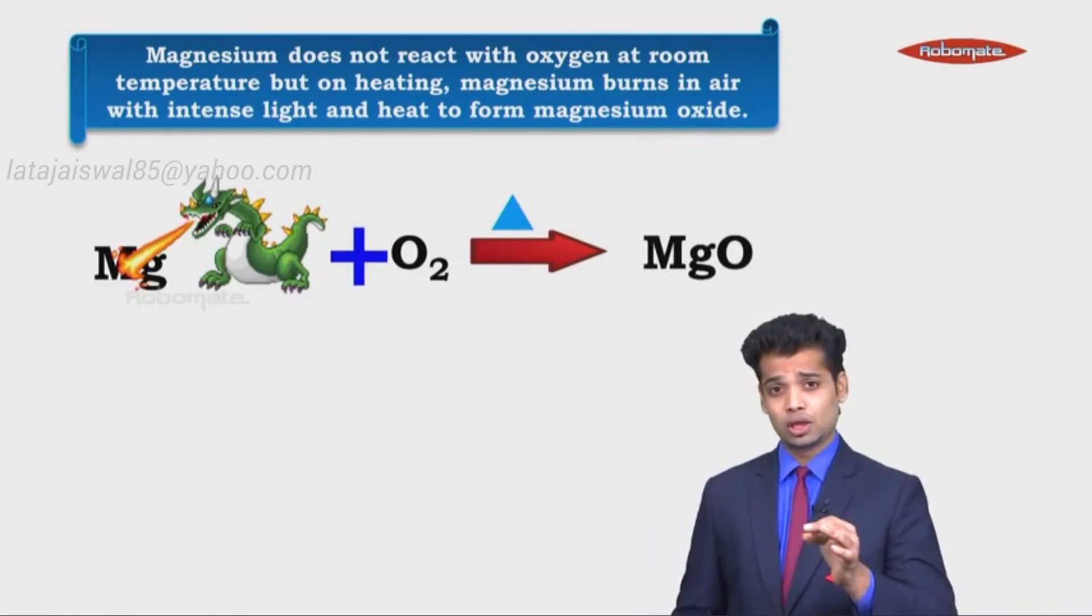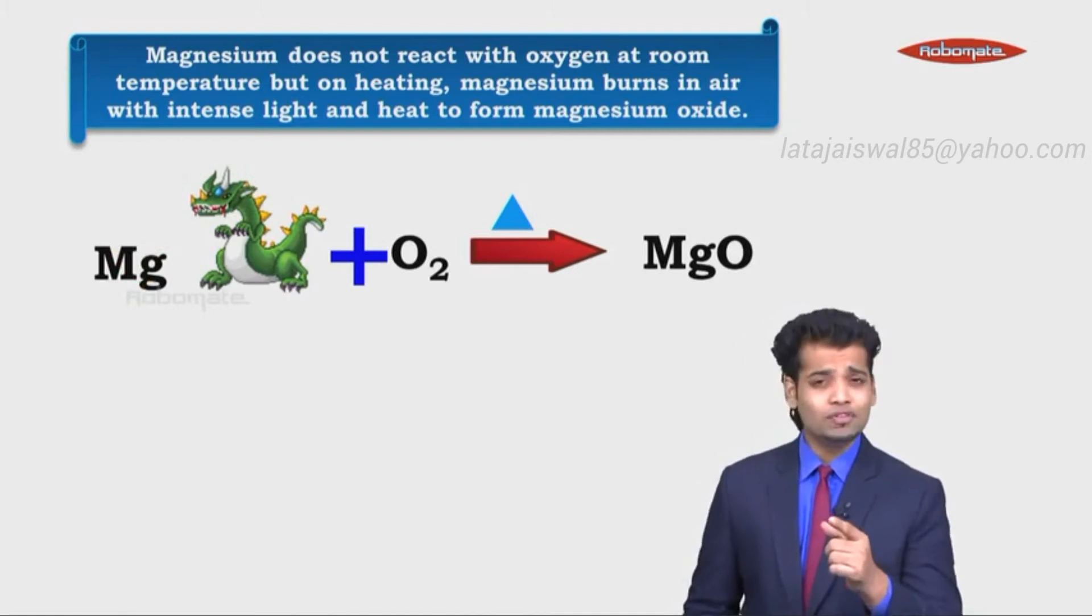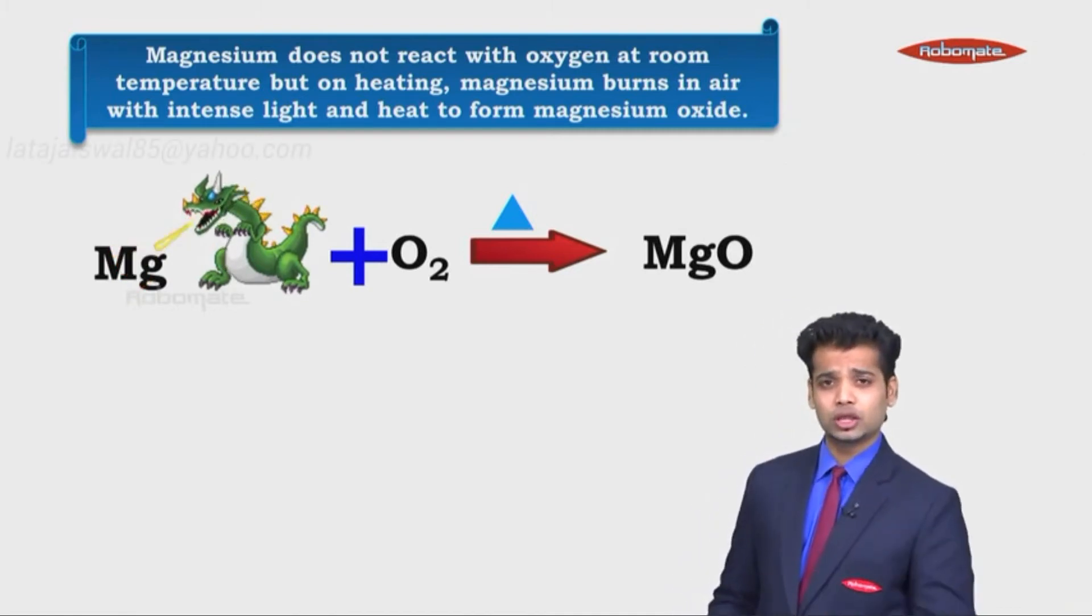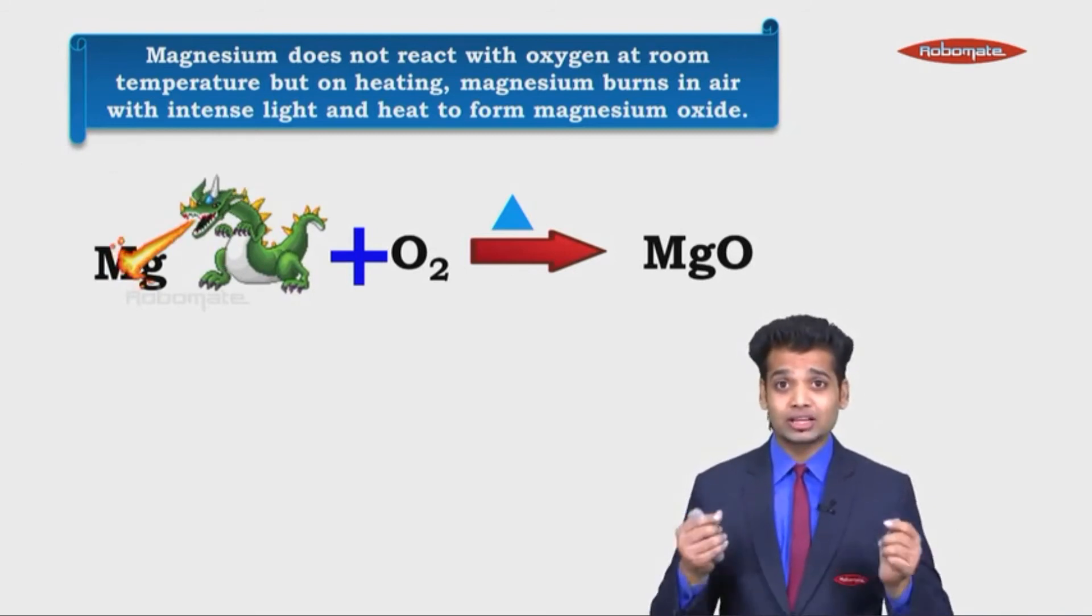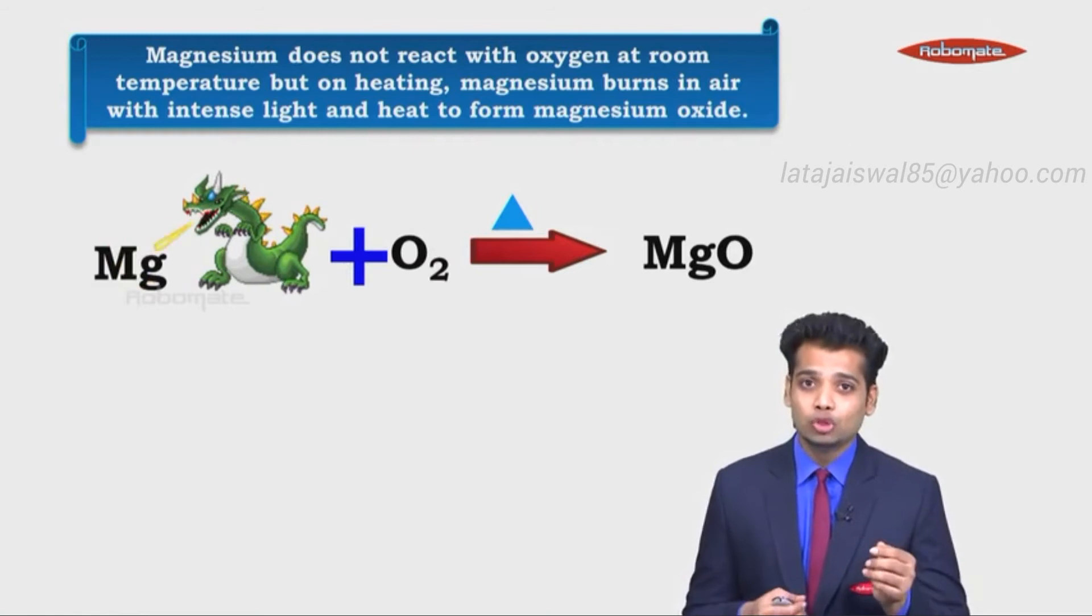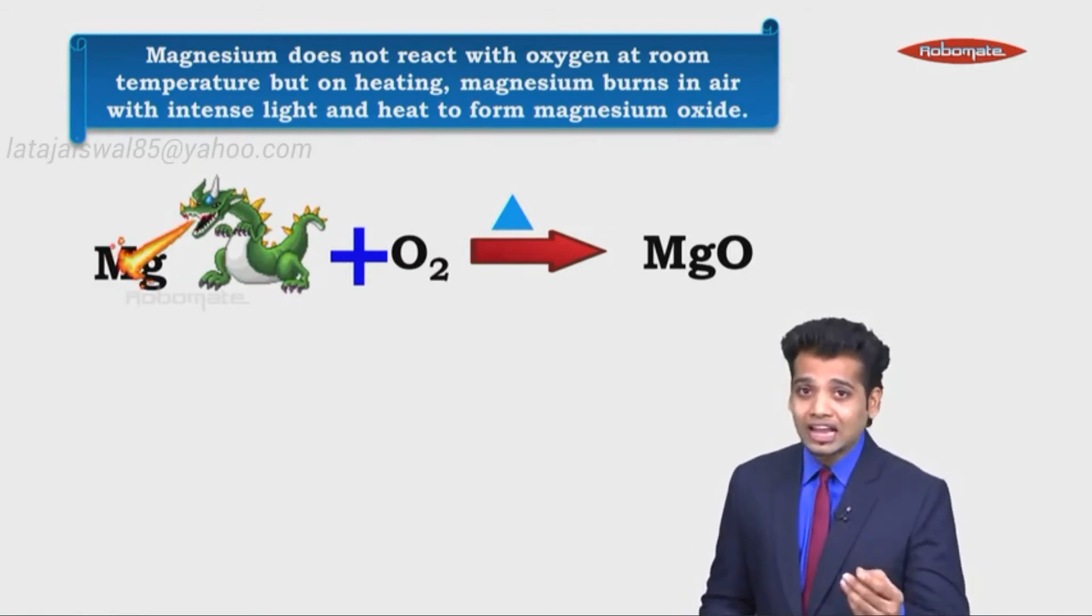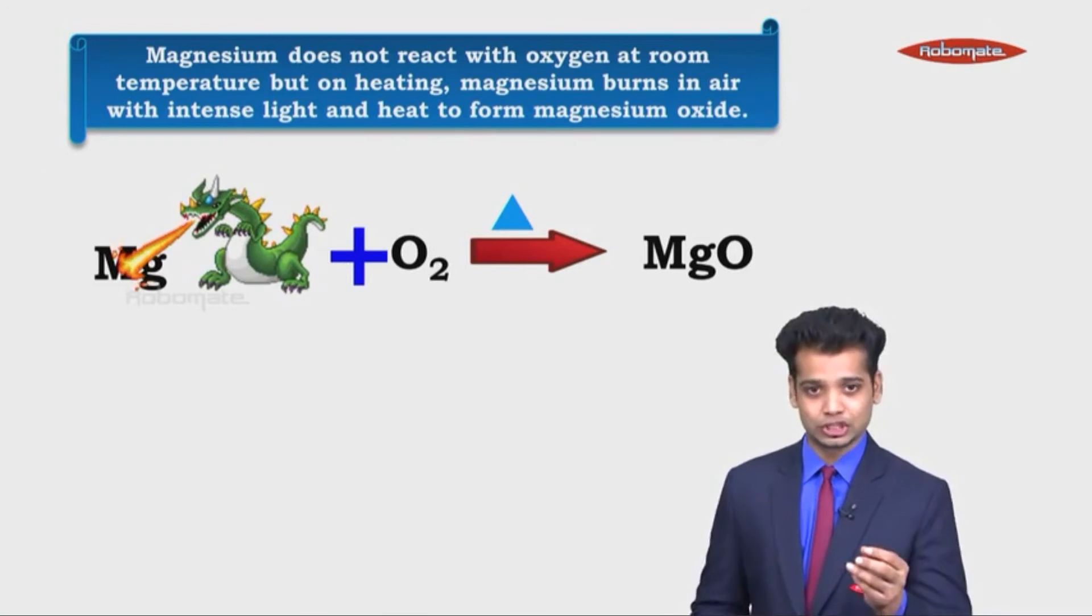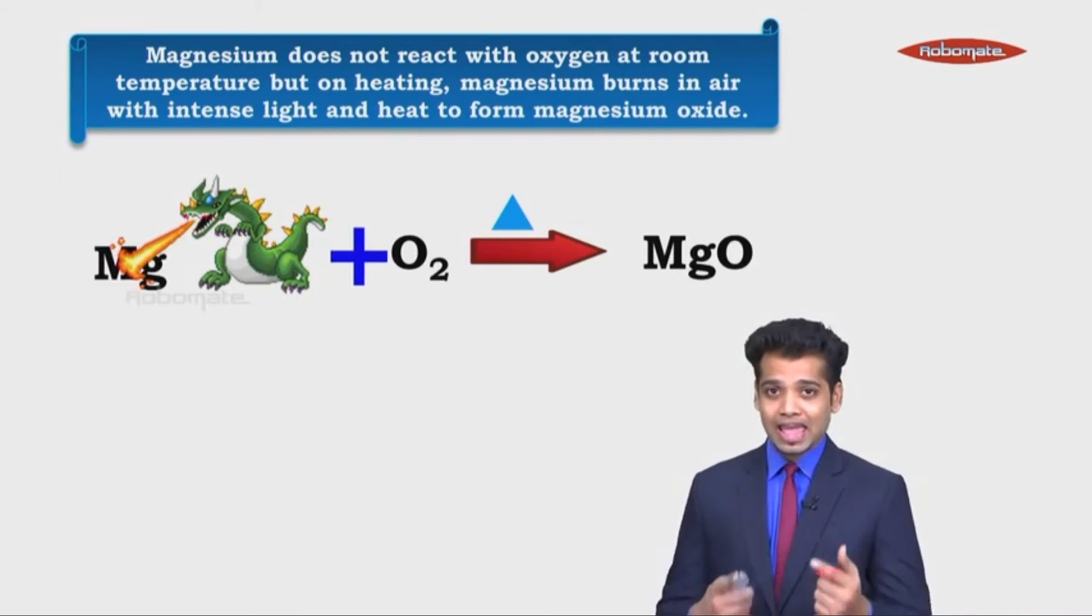Now, my question would be, what will happen? Have you seen this reaction before? Magnesium plus oxygen? You have seen it. You must have played with those firecrackers, those sursuris, the phuljhadis we call it in Diwali. Those are nothing but magnesium, and the white color ash that they form after burning is nothing but magnesium oxide. So they give out intense light. Hence, magnesium is used in firecrackers.